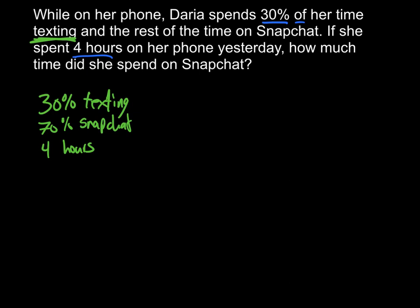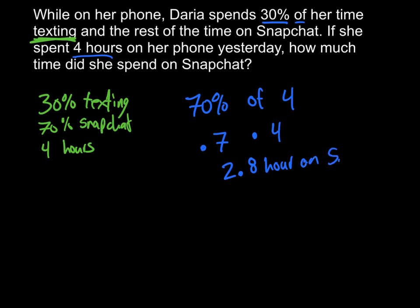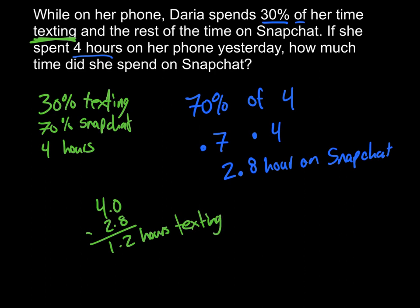We can put in our three-word sentence and say 70% of her time, which is four hours. So we have 0.7 — 'of' means multiply — times four. Seven tenths times four gives you 2.8, and so that's 2.8 hours on Snapchat. Which means that if there are four hours total, we can take away those 2.8, which gives us 1.2 hours texting. So again, pay careful attention and make sure that you're answering what it is asking.